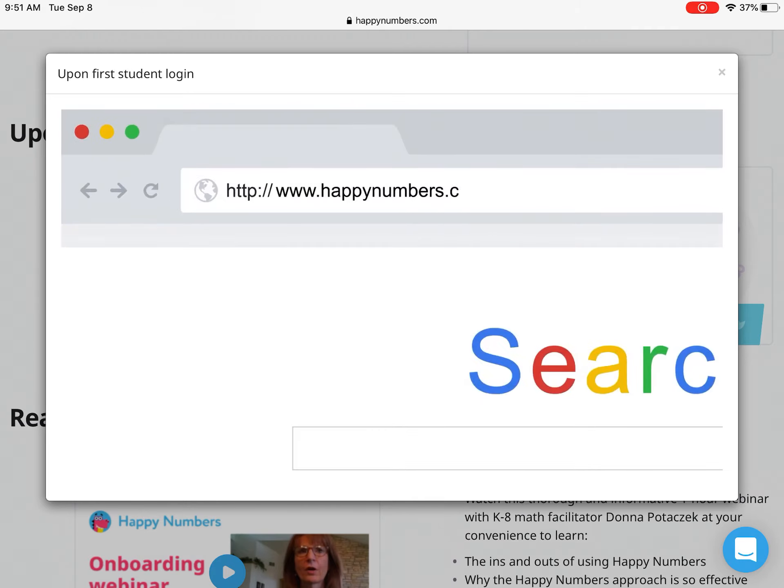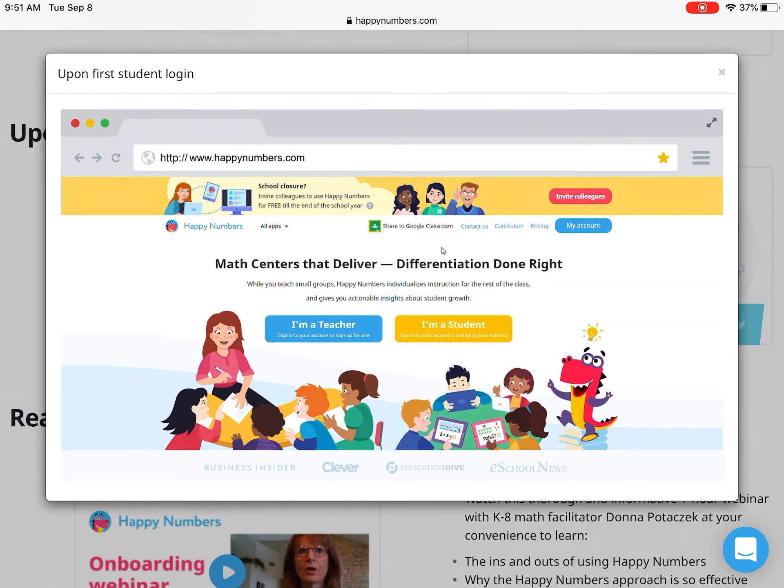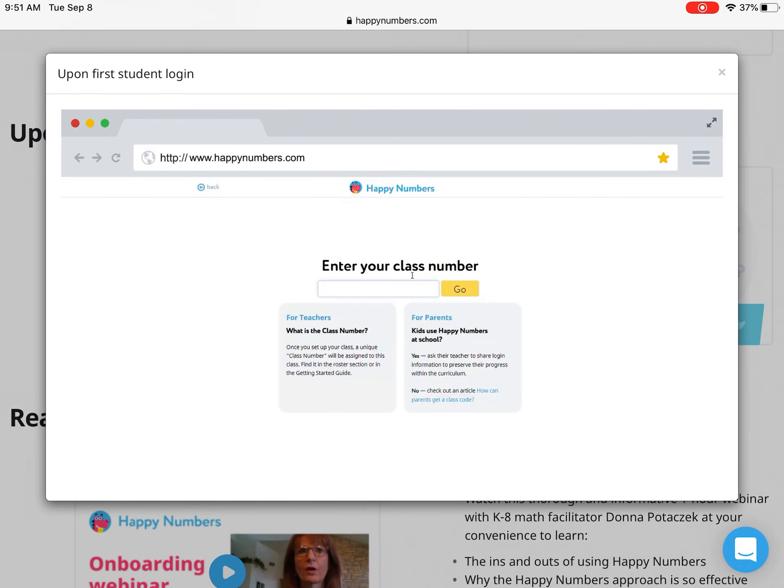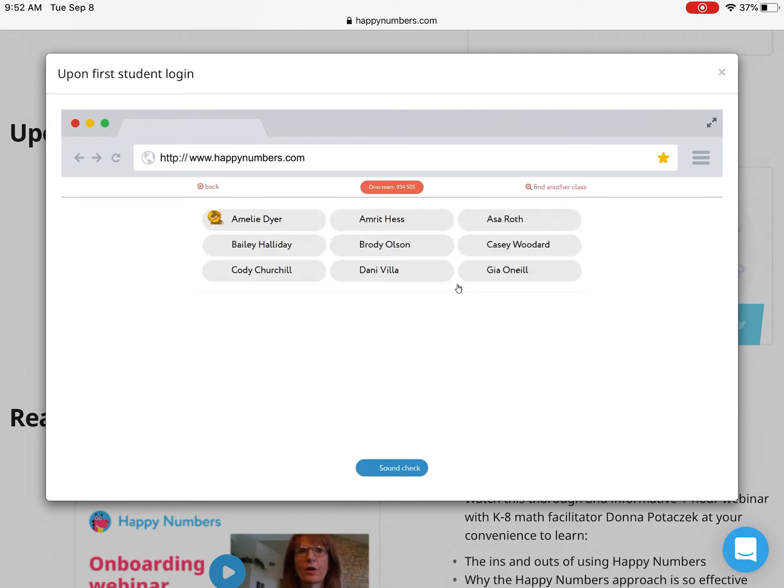Parents will go to www.happynumbers.com and click the big yellow I'm a student button in the middle of the page. At their first login, parents will be asked to enter the class number. From then on, the device will remember this number so they won't have to enter it again.